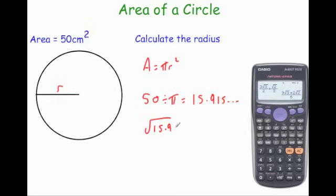15.915 and so on. So we just square root that and that would give us the radius. So the radius r is equal to 3.989 and so on centimeters.